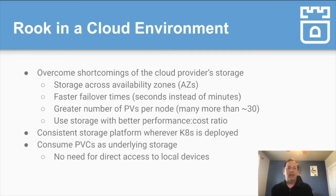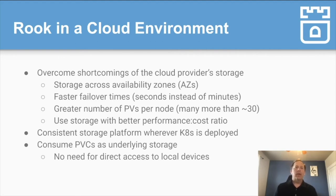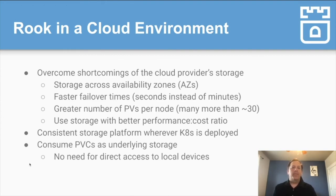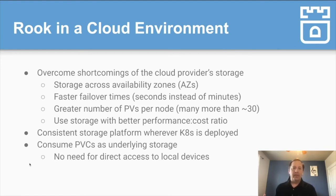In a cloud environment, you might wonder why you'd even use Rook when the cloud provider already has a storage platform. We found there are certainly some shortcomings that cloud environments have that Rook can overcome. You can have storage that spans availability zones, faster failover times — seconds instead of minutes — and a greater number of PVs per node. Some cloud environments limit that to around 30 PVs per node; that limit is just gone with Ceph. You can also have a better performance-to-cost ratio — your application might need small PVs, which usually comes with a performance hit in cloud environments, but Rook doesn't suffer from that because you can start with large PVs and the size of the PV won't affect performance.